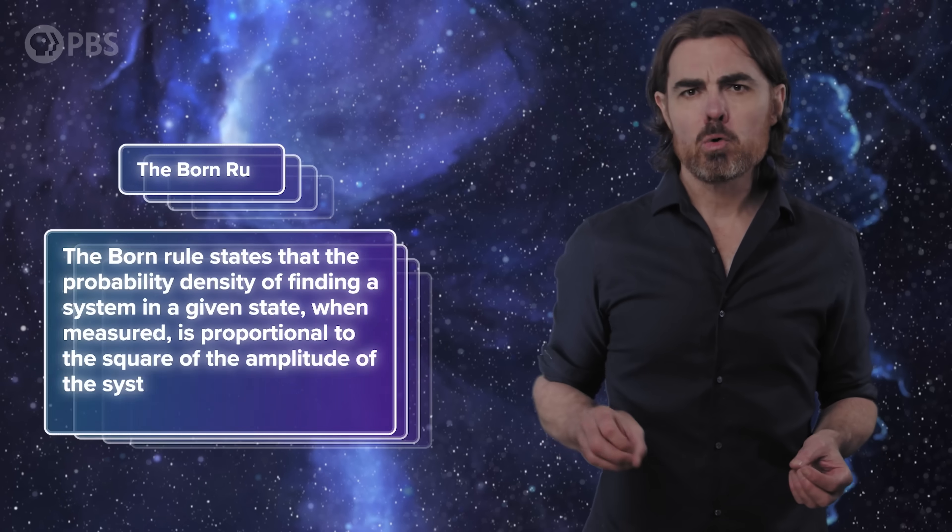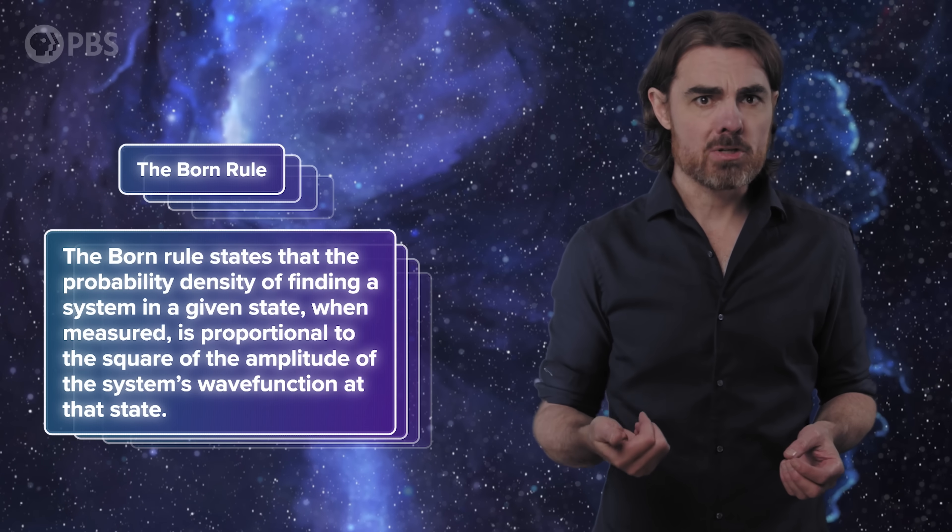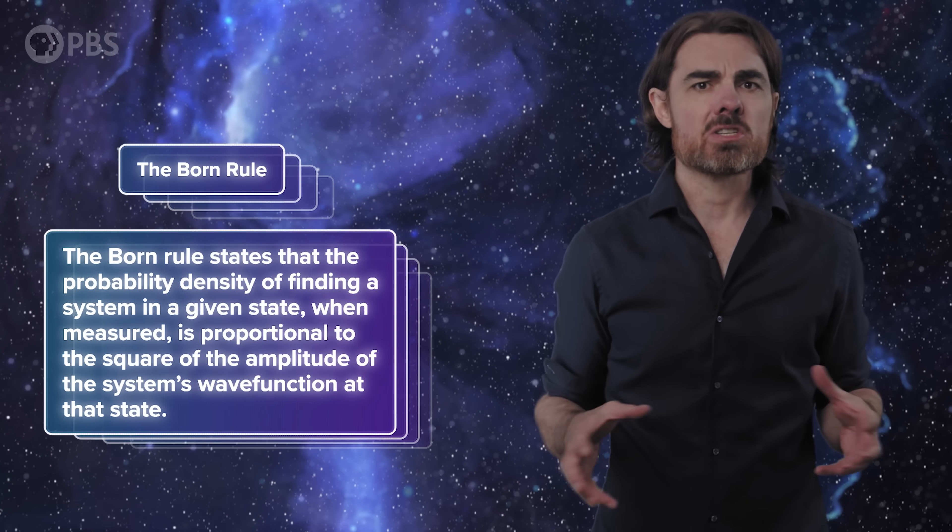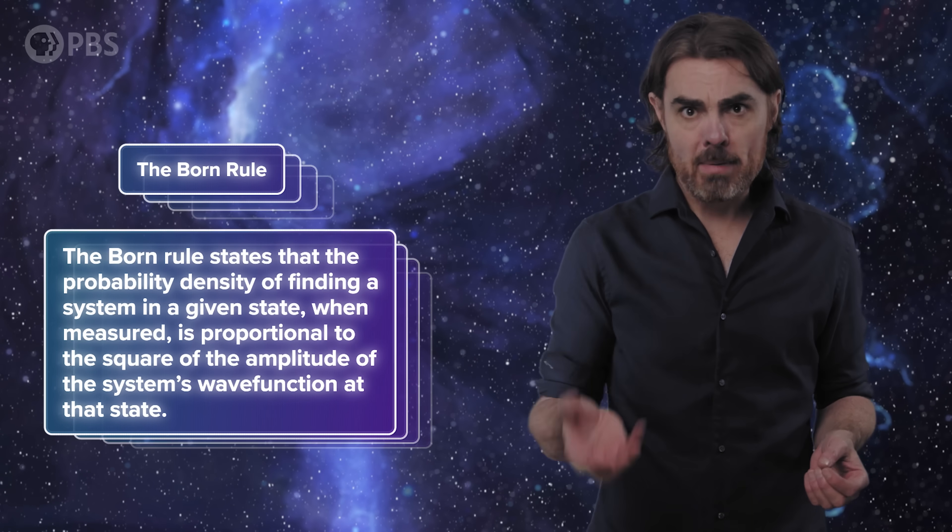The problem is that on the surface, many-worlds seems unverifiable — there's no way for us to ever interact with those other branches. But there may be a way to improve our confidence in a theory without a direct test, and that's by seeing if the theory offers an explanation for something else confusing in quantum mechanics. And there is one more thing that we've just sort of accepted since the beginning of quantum mechanics but never fully explained, and that's the Born rule. The Born rule is taken as a starting axiom in standard quantum mechanics, but if an interpretation could tell us why the Born rule works the way it does, that would be a point in its favor.